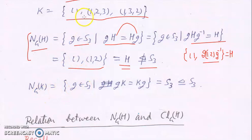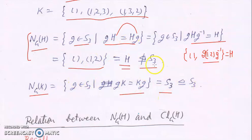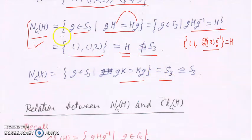Similarly, for the subgroup K, the normalizer of K in G turns out to be all of S₃, because K is a normal subgroup. As we can see, the normalizer of H need not be normal in S₃, and in this example the normalizer of K in G is the whole S₃.